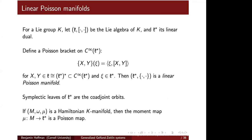Why you might care about this: if you have a Hamiltonian K-manifold — M with symplectic form omega and moment map mu — one way to phrase the moment map condition is to say that the moment map from M to little k-star is a Poisson map. So if you care about Hamiltonian K-manifolds, you should care about these linear Poisson manifolds.